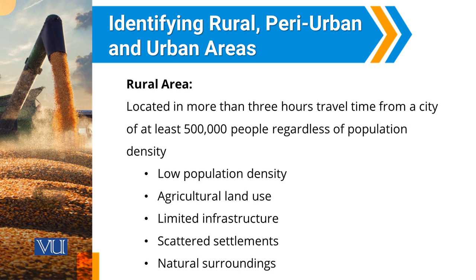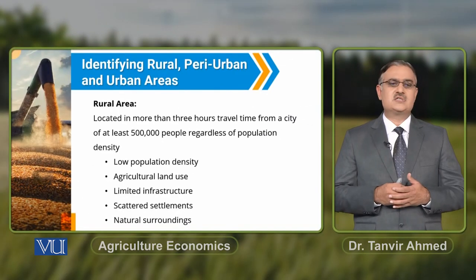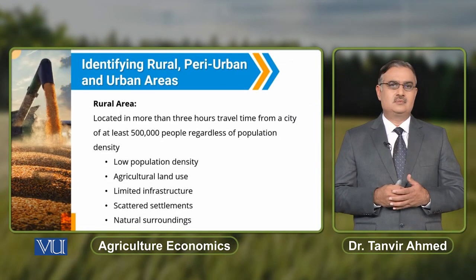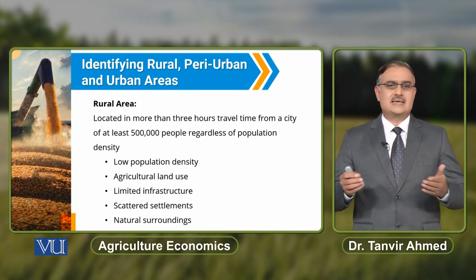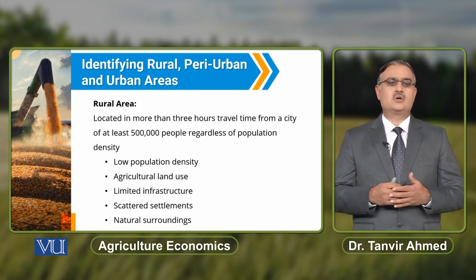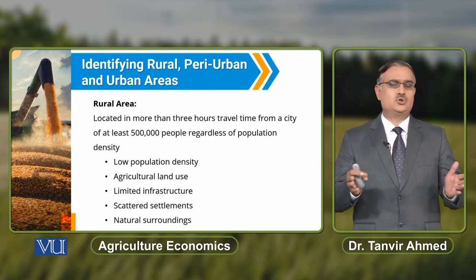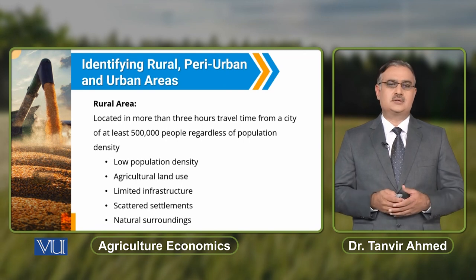If we talk about rural area characteristics, these rural areas have low population density. They use the land for agricultural purposes, and there is limited infrastructure. Settlements are scattered in rural areas, and rural areas are usually surrounded by nature.